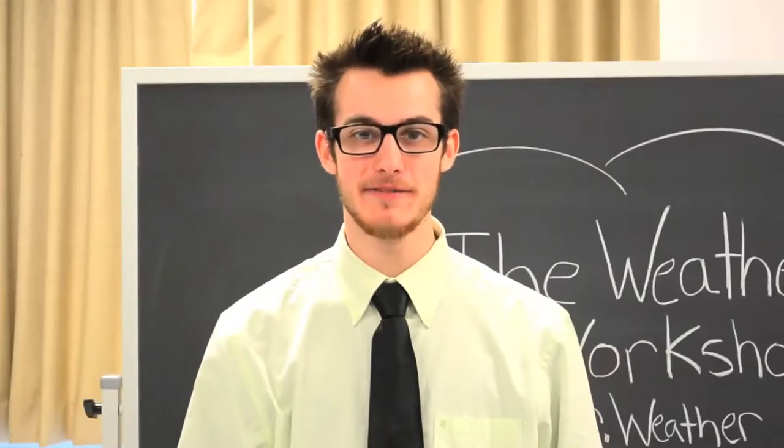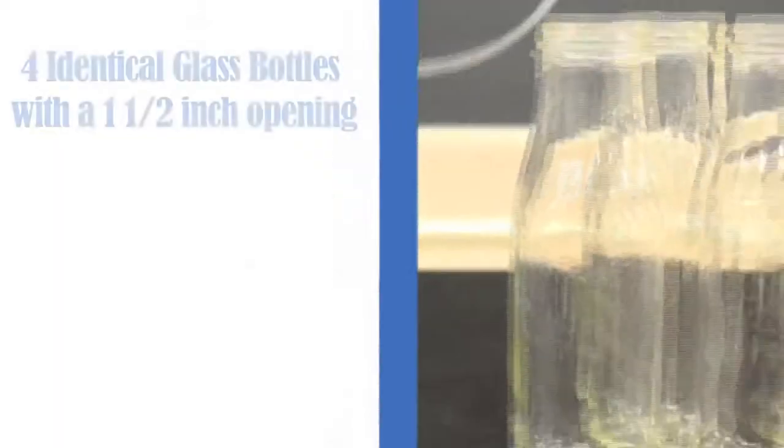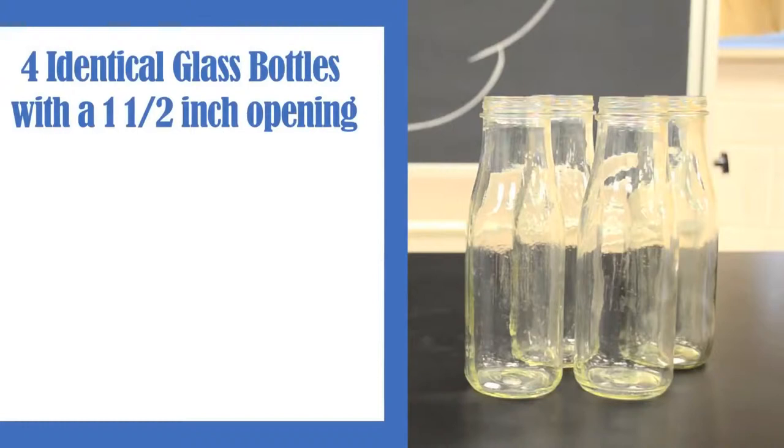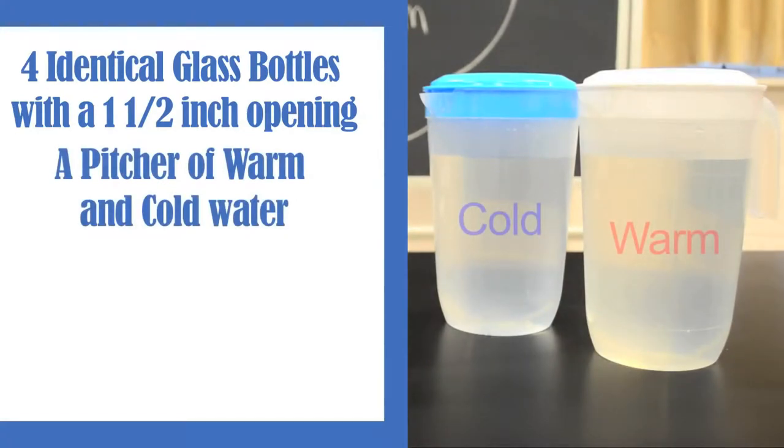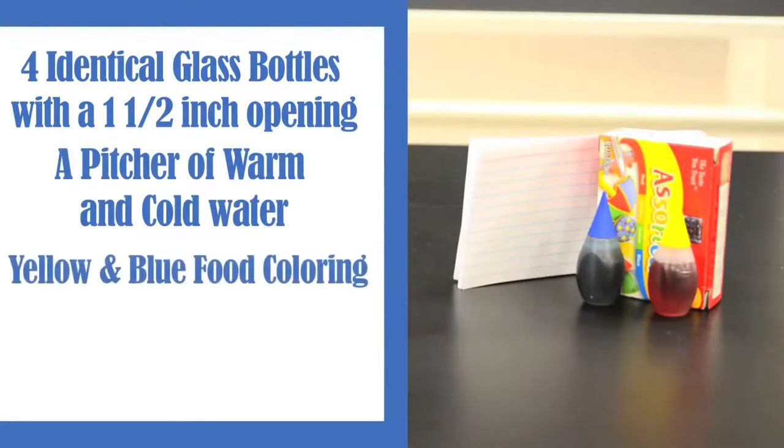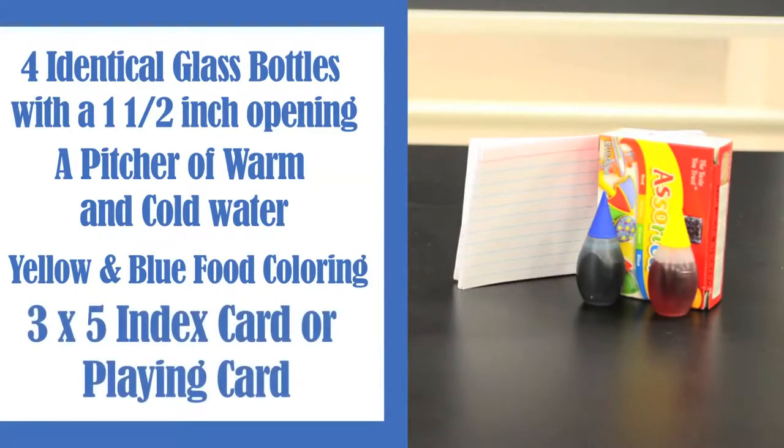Here are the things that we need for this experiment. First, we need four empty, identical glass bottles with an opening of one and a half inches in diameter. Second, a pitcher of warm and cold water. Third, we need yellow and blue food coloring. And lastly, a 3x5 index card or an old playing card.